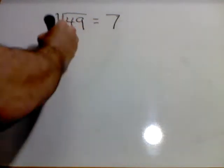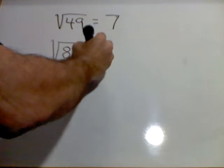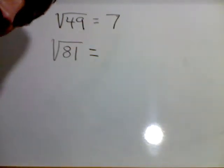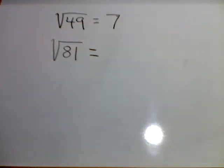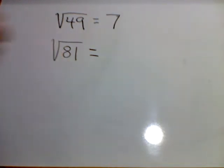Next, let's try square root of 81. I need a number 2 times that gives me 81. That number is 9.